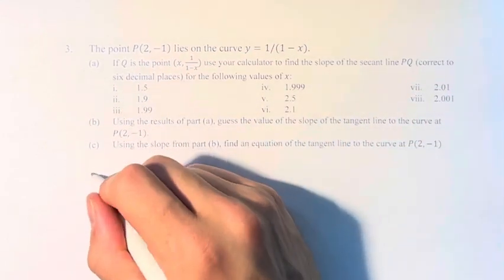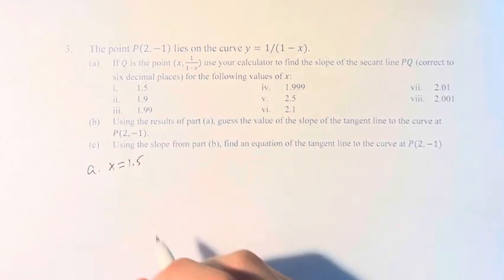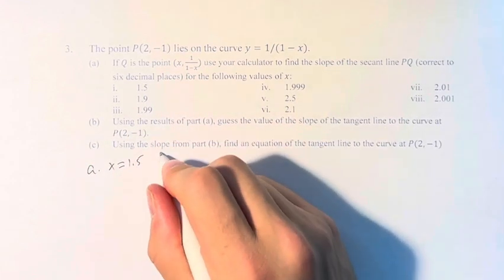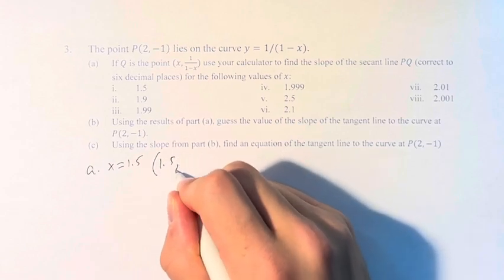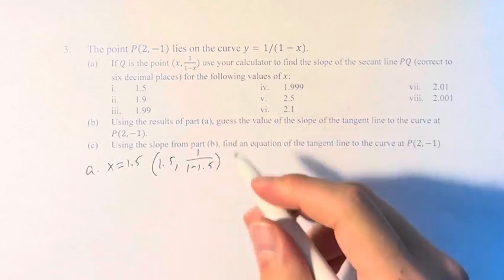So I'm going to do first x equals 1.5. If x equals 1.5, then the point (1.5, 1/(1-1.5)) is the point Q.